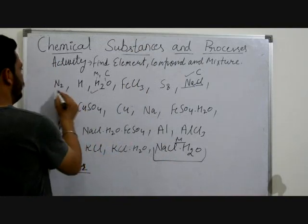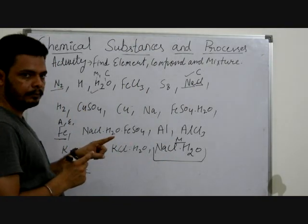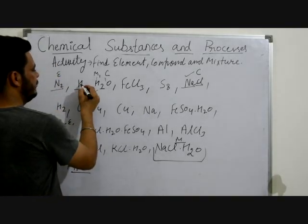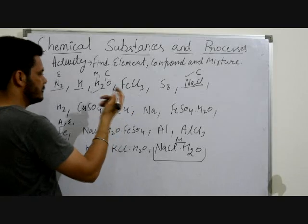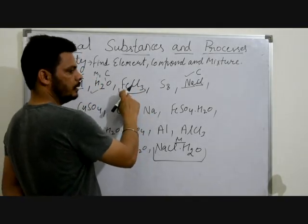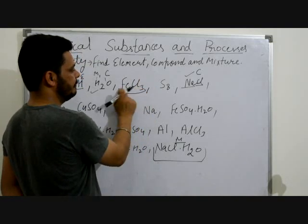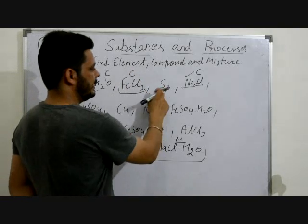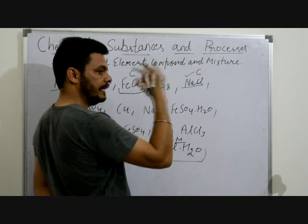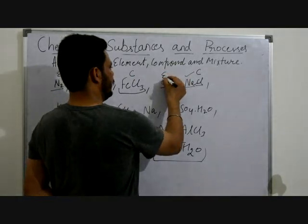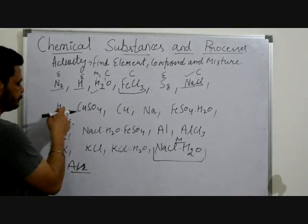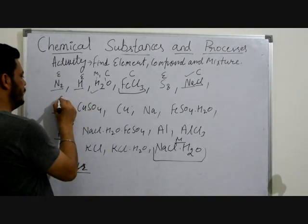N2 — the atoms are the same, so it is an element. H — all atoms are the same, so it is also an element. FeCl3 — there are two kinds of atoms, Fe and Cl, which are different and in a fixed ratio, so this is a compound. S8 — eight atoms of sulphur, all same kind — it is an element. H2 — two same kind of atoms — it is an element.